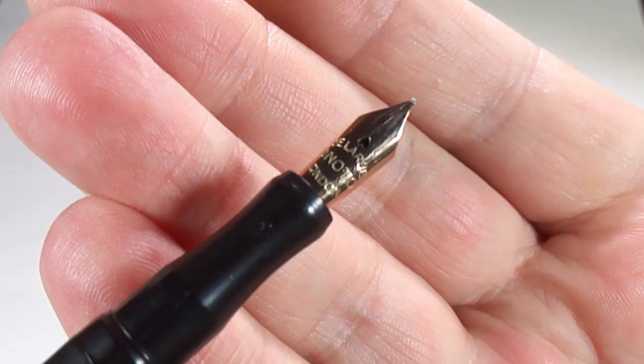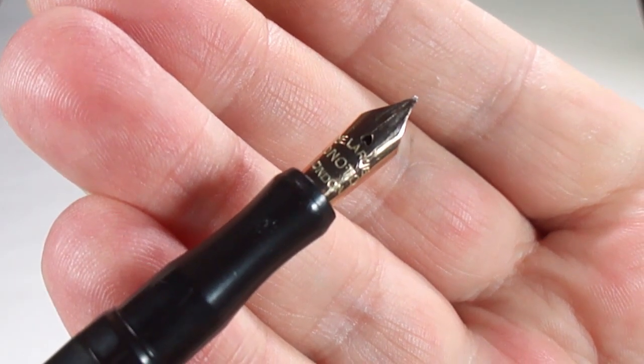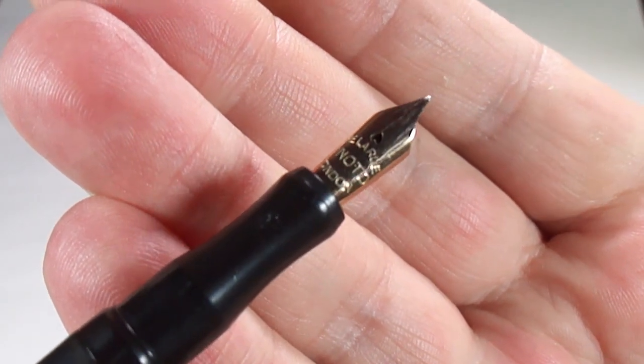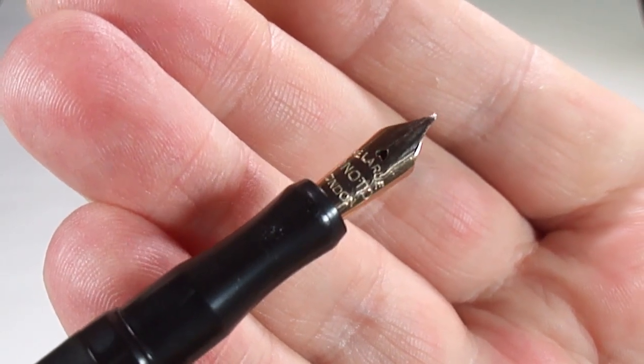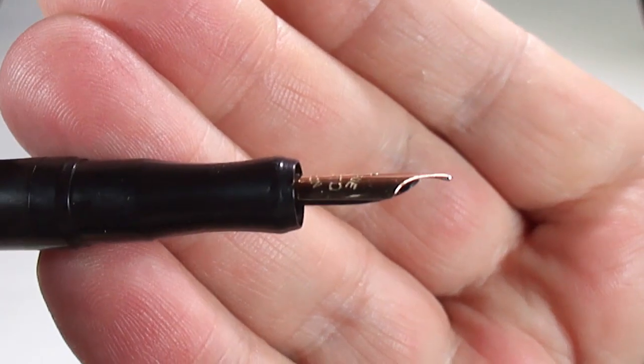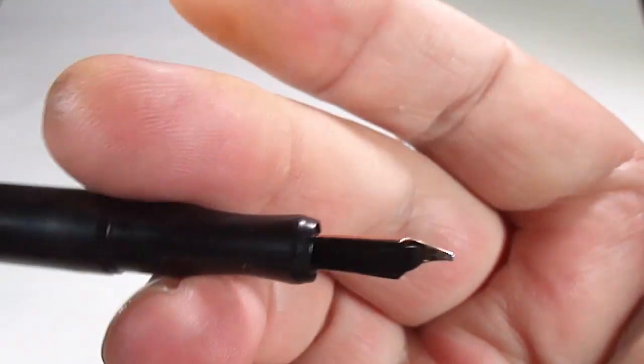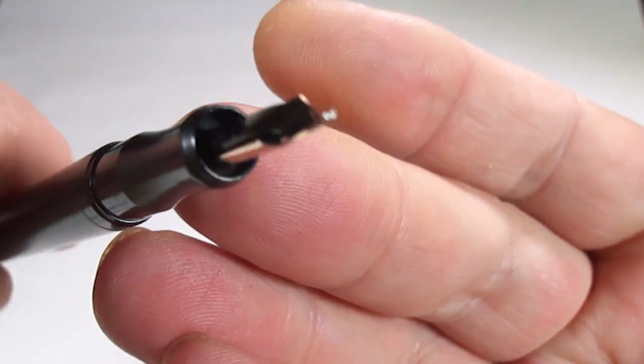Everything is nice and clean. Let's take you up to the nib. There we go, you can see it has Delarue Anoto London on the nib itself.